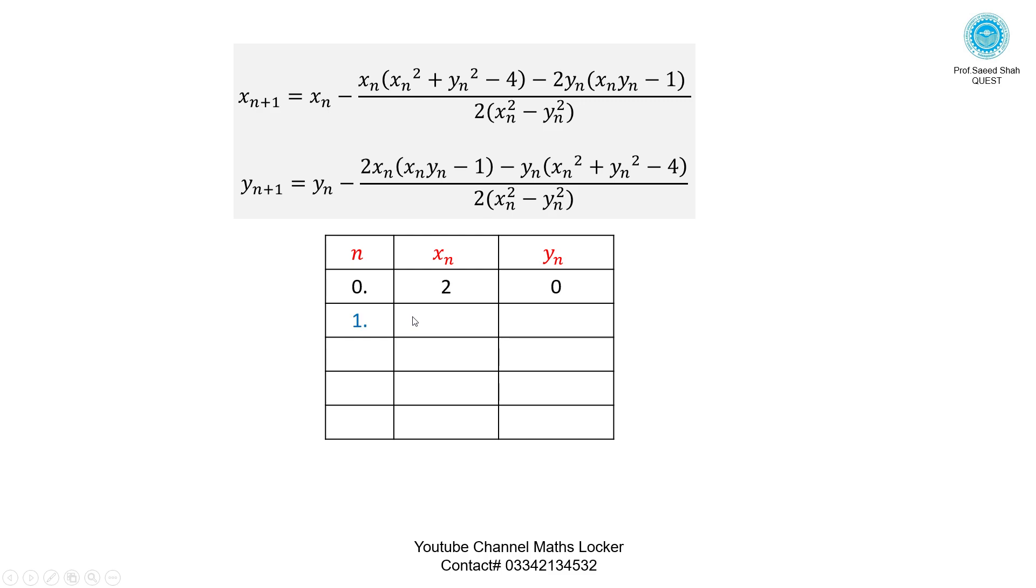For the first iteration we have a result 2, 0.5. Now the value 2, 0.5 again placing in place of Xn, Yn in the formula, then simplified. For the second iteration we have a value 1.93333, 0.516667.